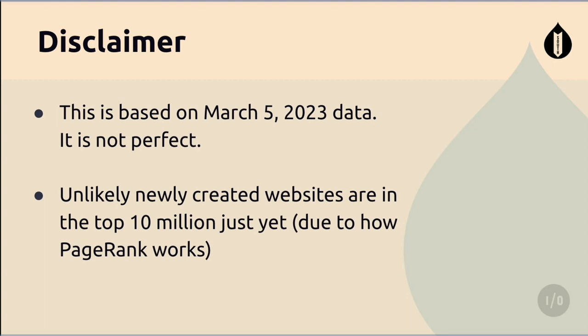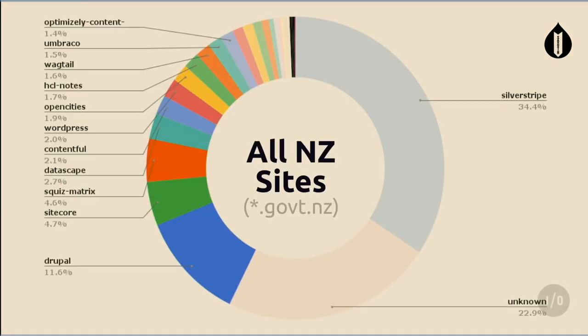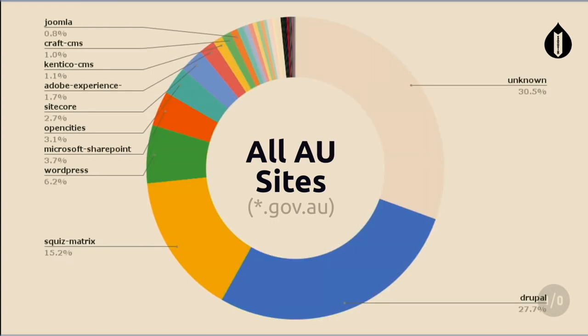For those who just want to see some graphs, here we go. This is based on March 5th data — it's not perfect, it's the best we have available. If you've just launched a brand new site, don't be sad if it doesn't appear. Unlike Australia, I can't break it down by state in New Zealand. What you can see is that SilverStripe is actually dominating with over one-third of the sites you likely visit day-to-day. Unknown is only 22%, which is actually lower than Australia. Drupal is at 11.6%, and then there's a very long tail of other CMS platforms.